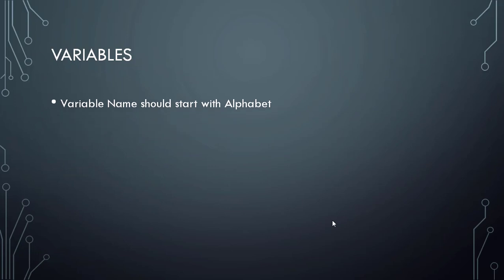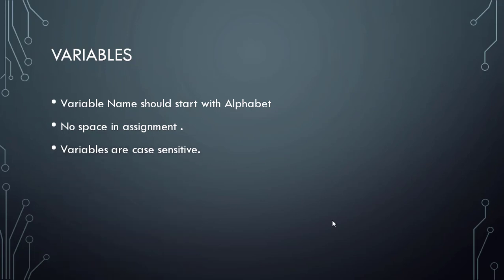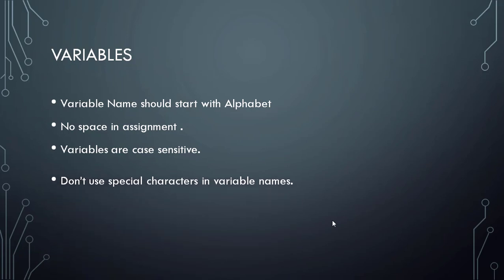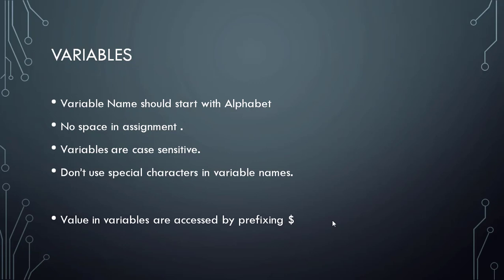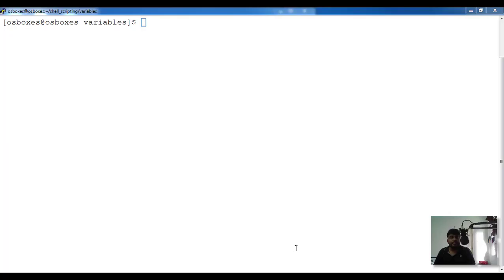The variable name should start with an alphabet — it should not start with a numeric value. When you assign a value to a variable, you should not leave a space in the assignment operation. Variables are case sensitive, and don't use any special character in a variable name. The value in a variable can be accessed by prefixing the dollar symbol.